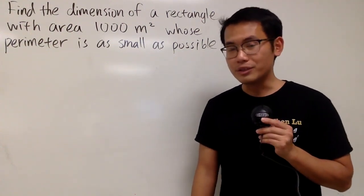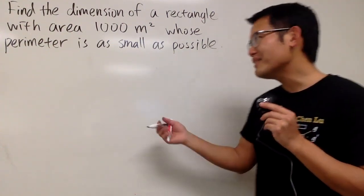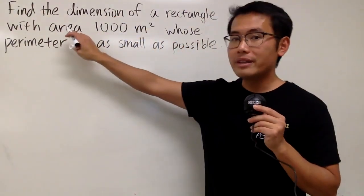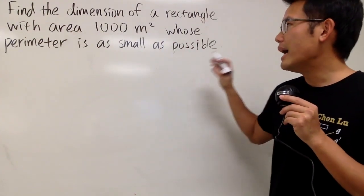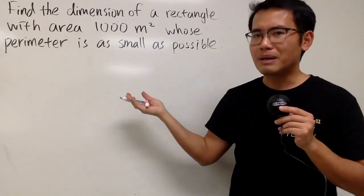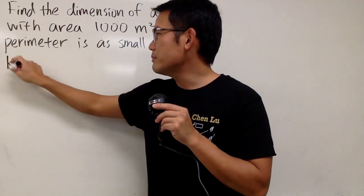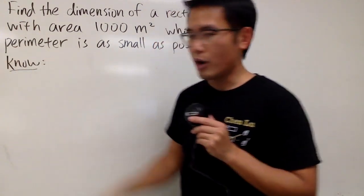Okay, this question is similar to the one that we just did, but it's also very different. So have a look. We are looking for the dimension of a rectangle, and this time we want the area to be 1000, and we want the rectangle to have the smallest possible perimeter in this situation. But still, follow the same strategy, let's go ahead and put down what we know.